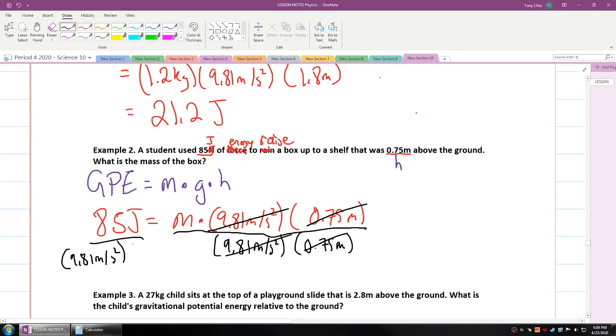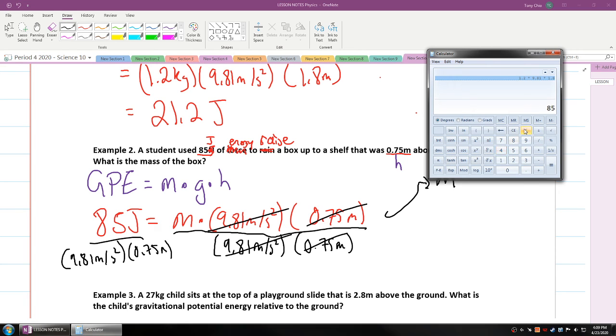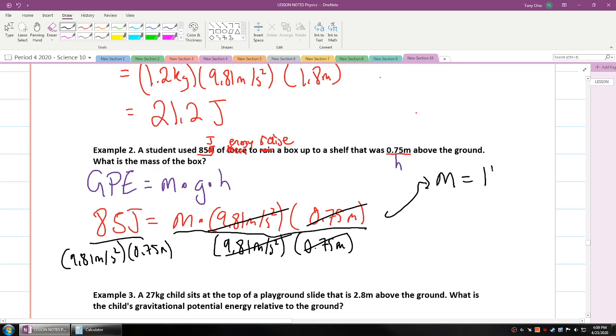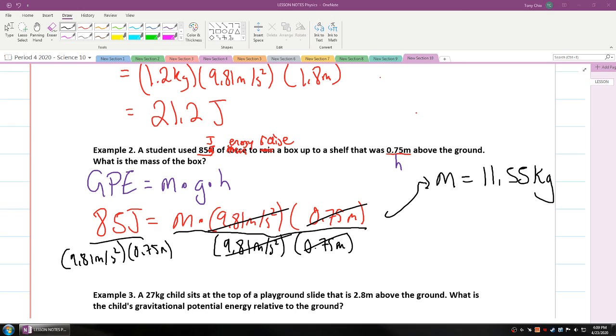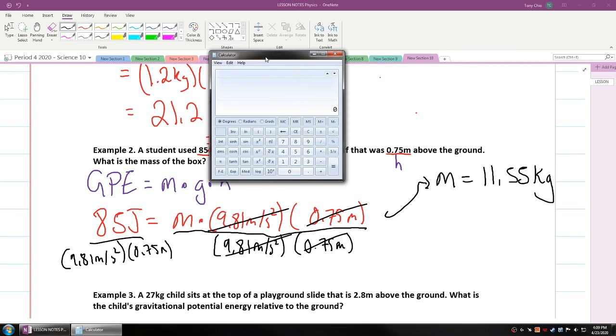You should get your mass. What is your mass going to be equal to? Well, if you plug this into your calculator, you're going to plug in 85 divided by 9.81 divided by 0.75, and you're going to get a mass of 11.55 kilograms. So 11.55 kilograms of mass. So if you were to check it again, you would see that that is the answer.